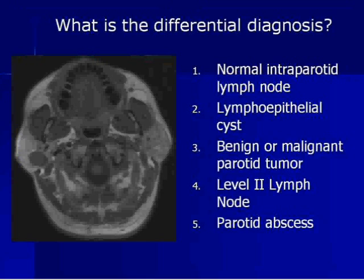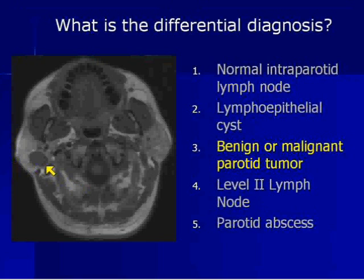So is it: 1) normal intraparotid lymph node, 2) lymphoepithelial cysts, 3) benign or malignant parotid tumor, or 4) level 2 lymph node or parotid abscess? Very good. So it's a primary neoplasm of the parotid gland. It's obviously not a normal intraparotid lymph node — it's just too big. And it's not a level 2 lymph node because it's in the substance of the parotid gland, so those two you can pop right out.